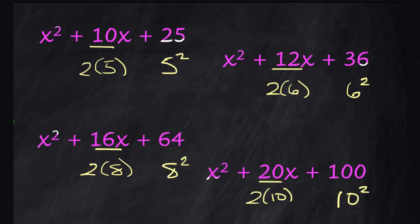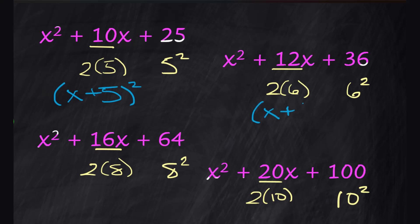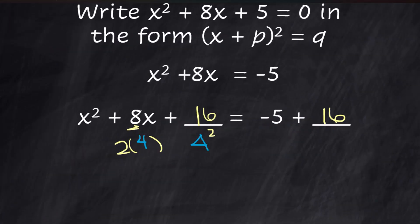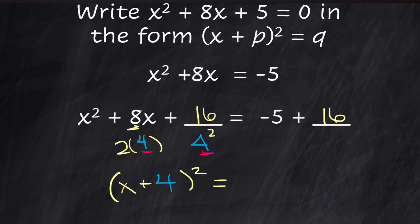Let me pop back to the previous screen to show one more step. x² + 10x + 25 = (x + 5)², x² + 12x + 36 = (x + 6)², and x² + 16x + 64 = (x + 8)². So that 4 we found is the number that shows up inside the squared binomial. This gives (x + 4)² = −5 + 16 = 11. If you multiply (x + 4)(x + 4) you get x² + 8x + 16.